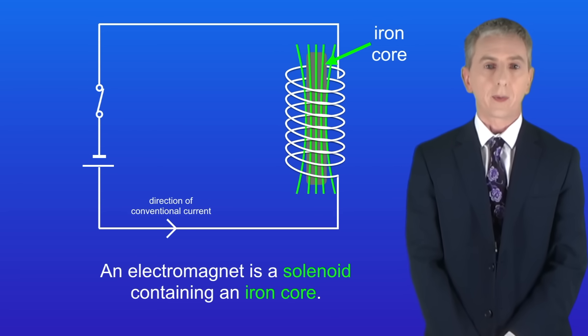Now we find electromagnets in lots of appliances, so in this video we're going to look at two that you need to know. These are a relay and an electric doorbell.